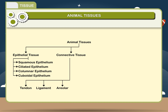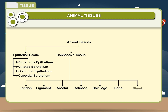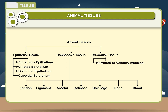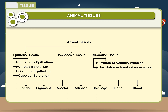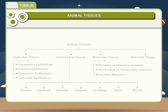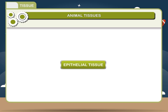The connective tissues include: Areolar, Adipose, Cartilage, Bone, and Blood. Muscular tissue includes: Striated or Voluntary muscles, Unstriated or Involuntary muscles, and Cardiac muscles. The other tissue types are Nervous tissue and Epithelial tissue.